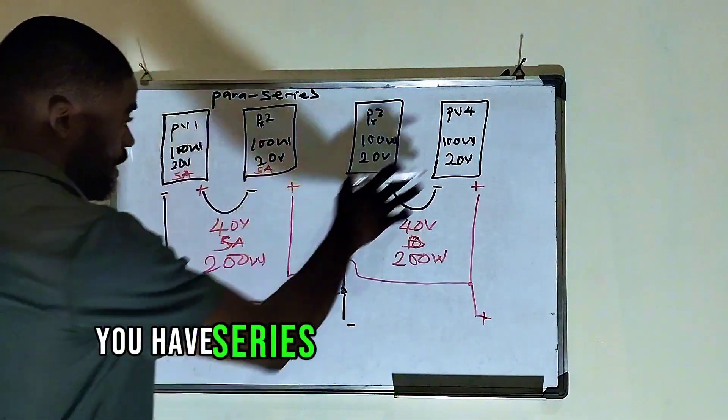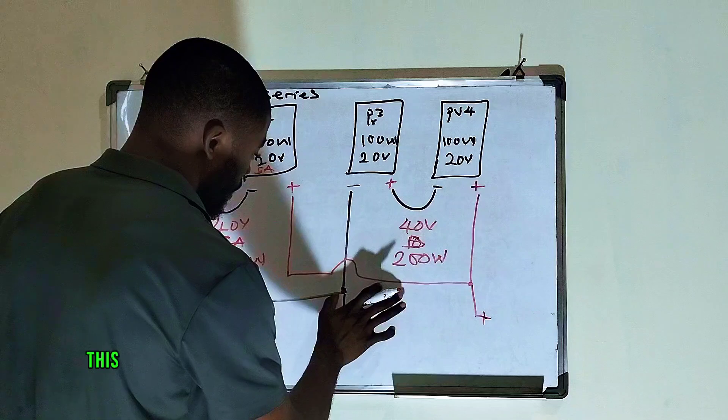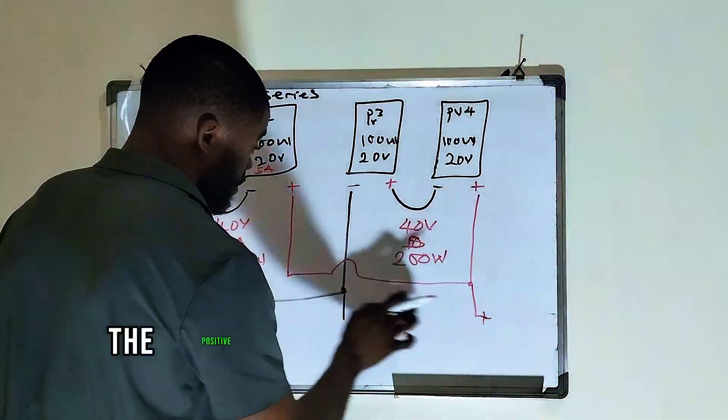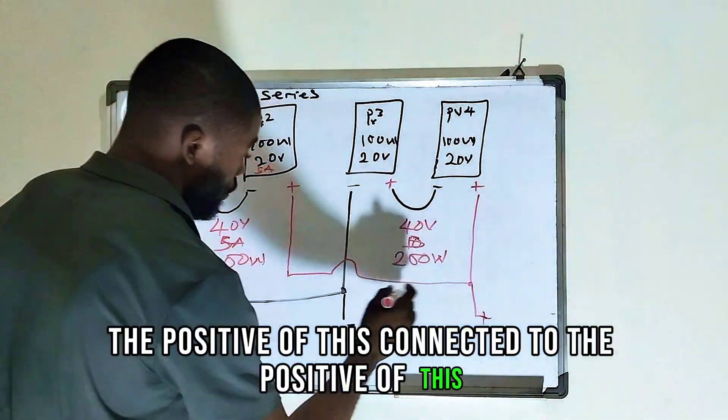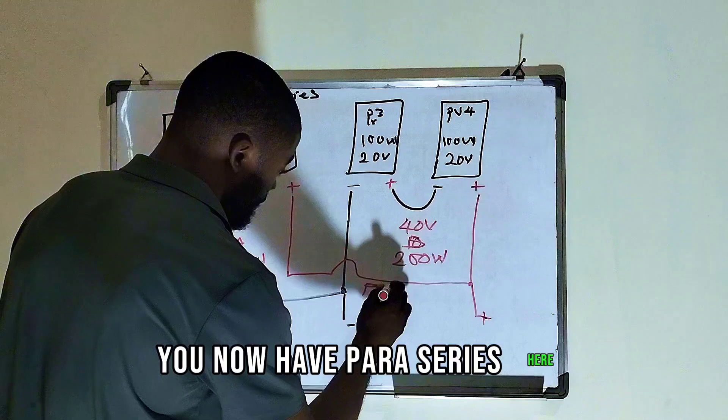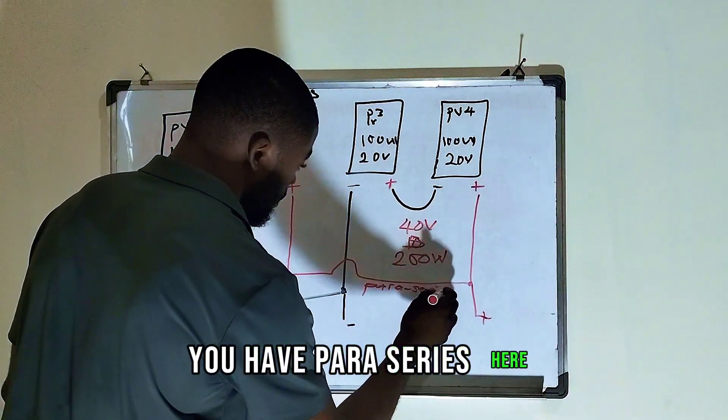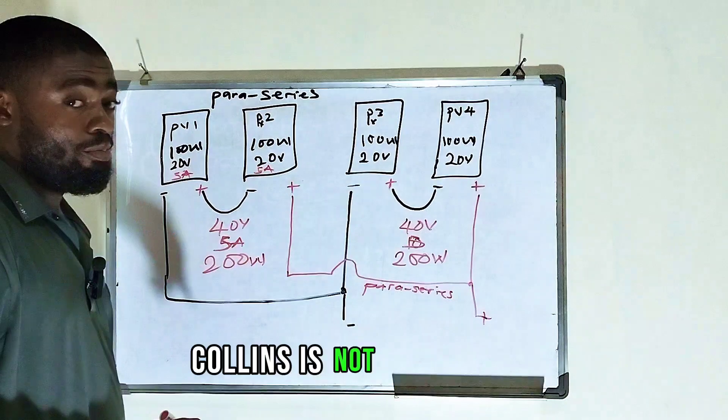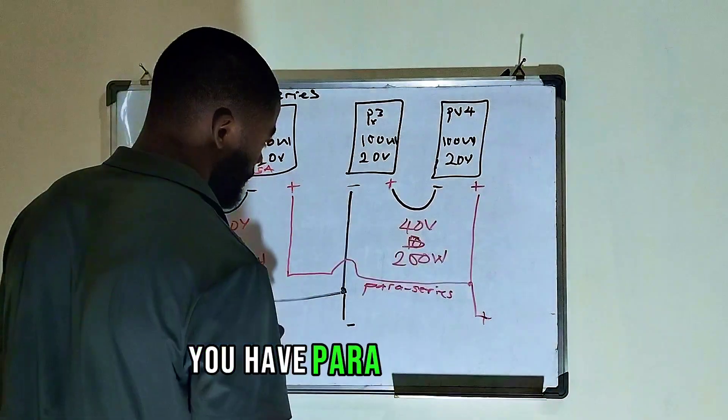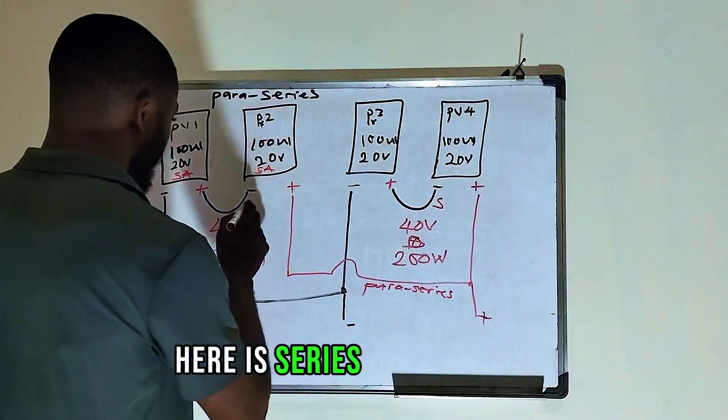Here you have Series, you have Series. Coming down here, this one connected to the negative of this. The positive of this connected to the positive of this. You now have Paraseries here. You have Paraseries here. Collins, it's not Paraleries. You have Paraseries here. Here is Series. Here is Series.